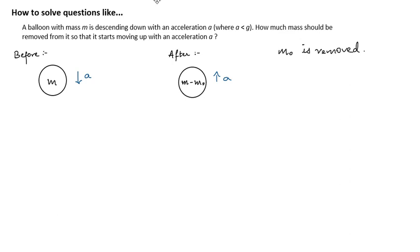To deal with this question we need some equations. We will construct free body diagrams for each of the cases: the before-removal case and the after-removal case. In both cases, the weight is acting downwards, and weight is mass times g. In the first case, the weight force is m times g, and in the second case the weight force downwards is m minus m₀ times g, because m minus m₀ is the final mass.